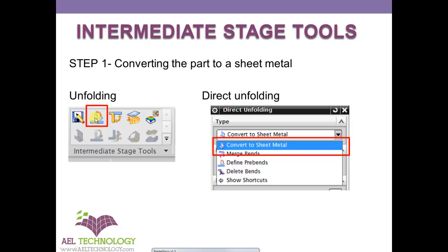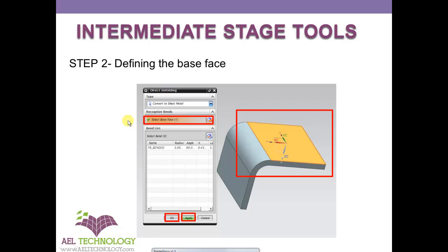For that, click on the unfolding icon, and once you click that there will be a dropdown window. From the dropdown menu you can select 'Convert to Sheet Metal.' Then in the second stage you need to specify the base face of the part, and Progressive Die Wizard will automatically calculate all the bends in it — the radius, the angle, the k-factor, and the developed length. Once it is identified, click Apply and OK.